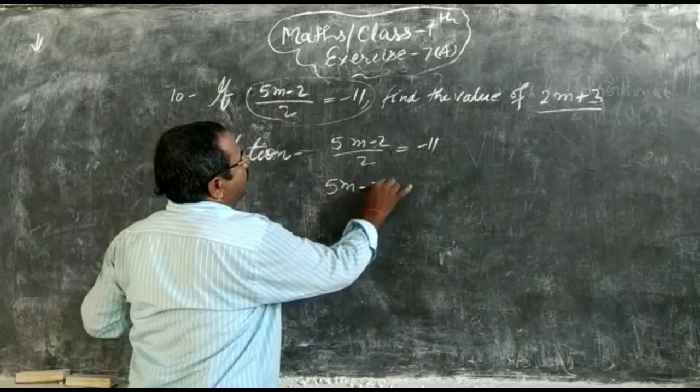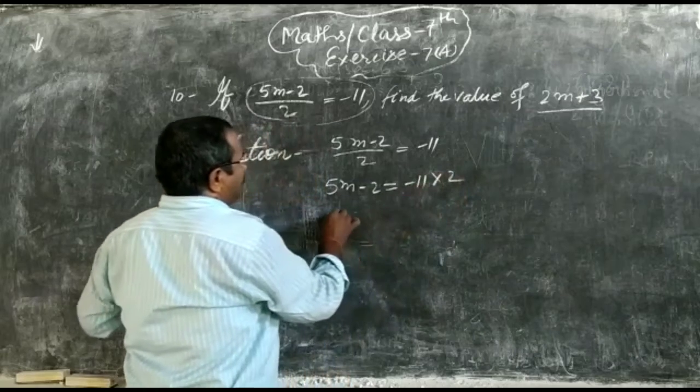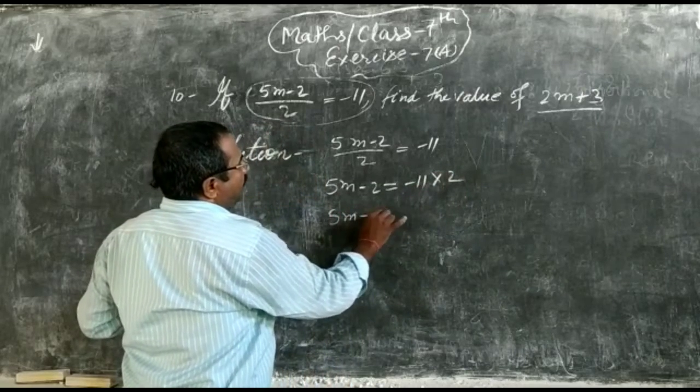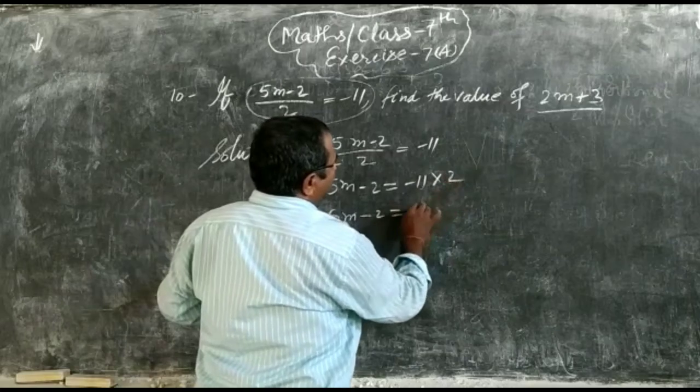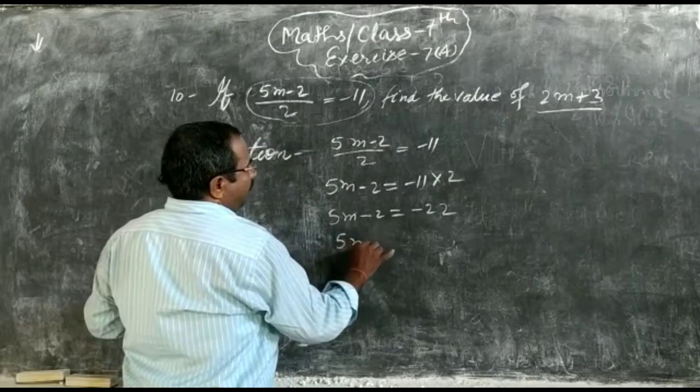In this way, 5m minus 2 is equal to minus 11 into 2. 5m minus 2 is equal to minus 22.